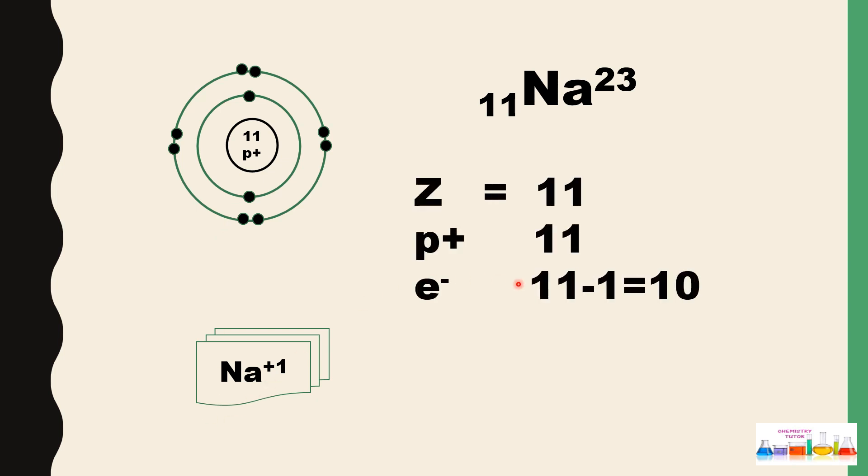Now what is happening? If we see, the number of protons is 11, number of electrons is 11. But now after losing one electron, the number of electrons left will be 10. Now which charge is more on sodium, positive or negative? Obviously the positive charge is more. That's why a positive charge will appear on sodium.